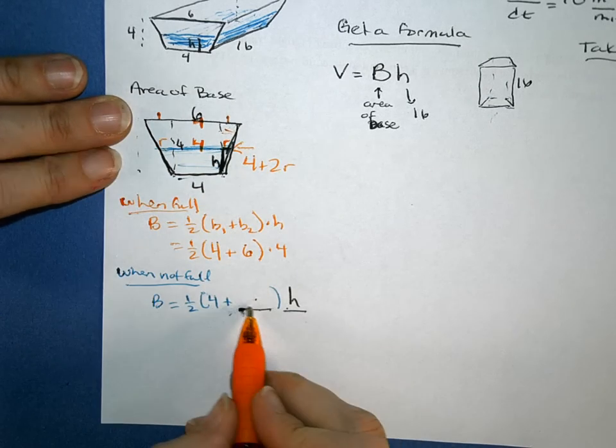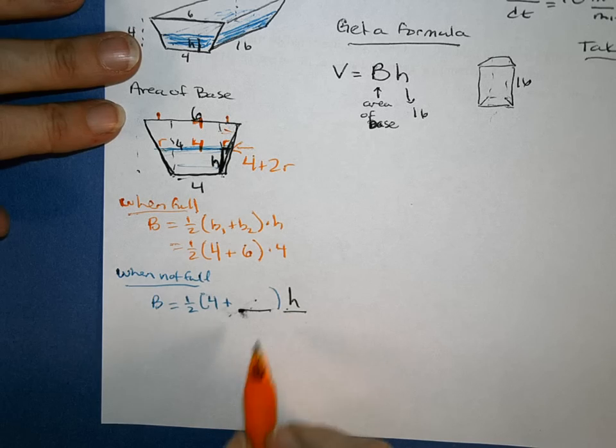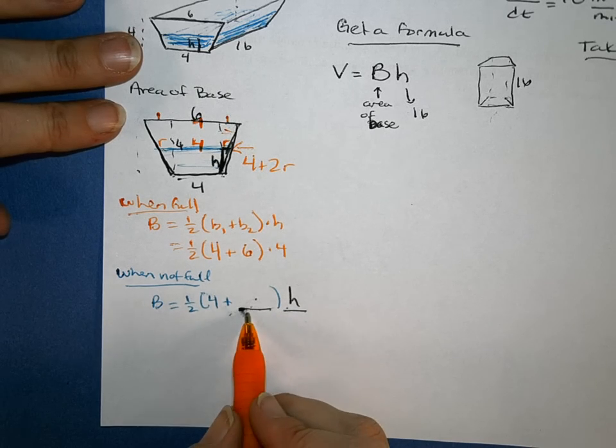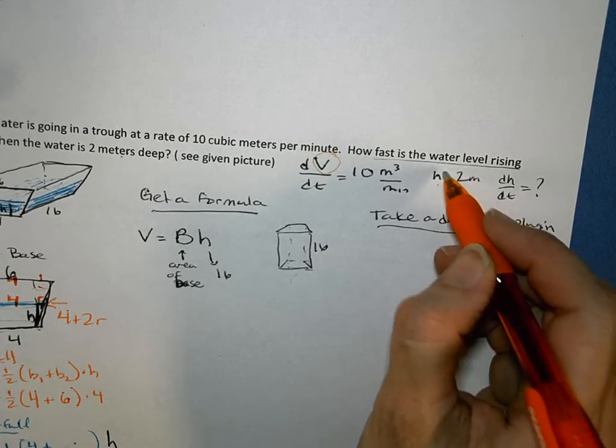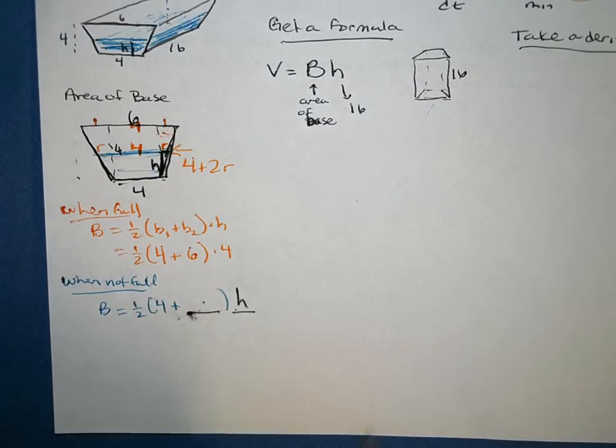And I could put that right in that spot right there, 4 plus 2R's, that's my top base. But then I would have R's in this problem. And I really only want, let's look, V's and H's. That's the only things I really want. So I don't really want to have that R that I artificially made.